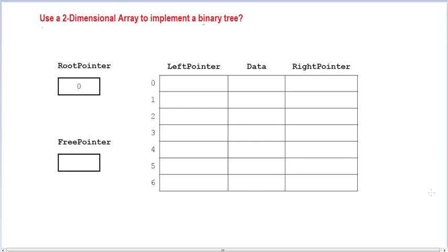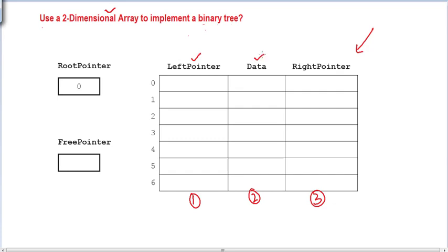This is a very small video that is just going to give you a small tip. What if the examiner asks us to implement a binary tree using a two-dimensional array? This is something that you've seen in your pre-release material also. We have a two-dimensional array with column one for left pointer, column two for data, and column three for right pointer. So how are we going to write code for a two-dimensional array to implement a binary tree?